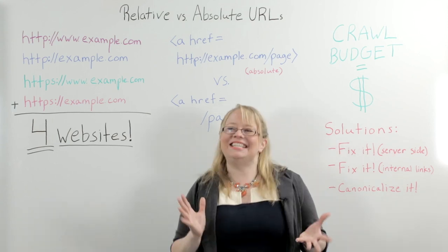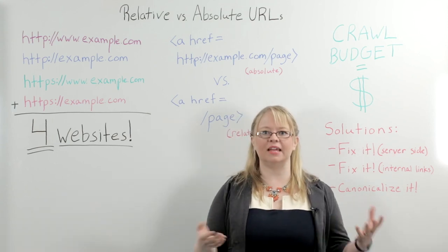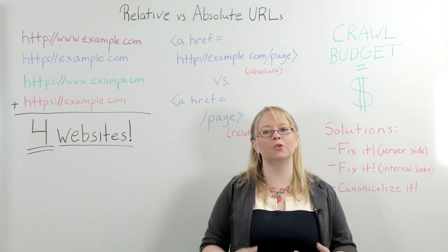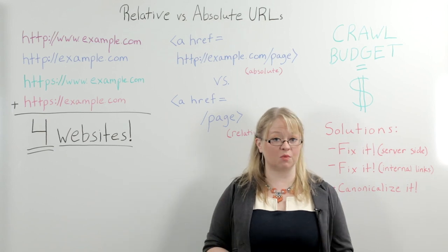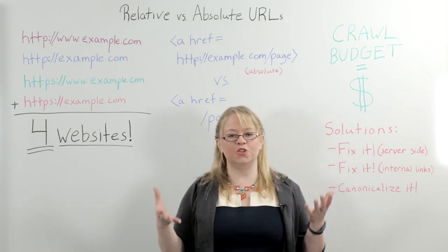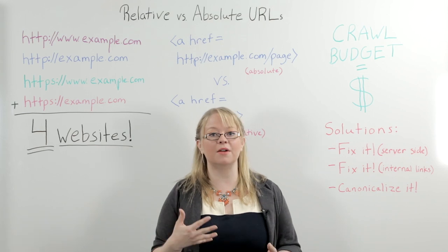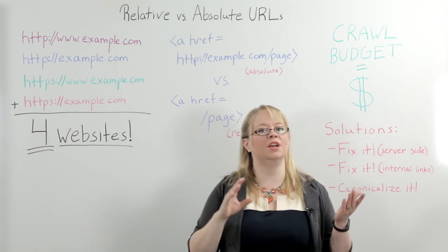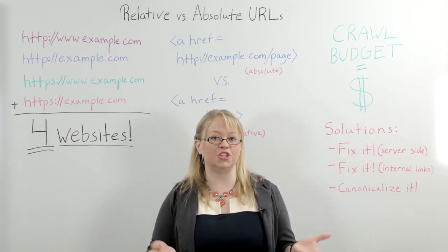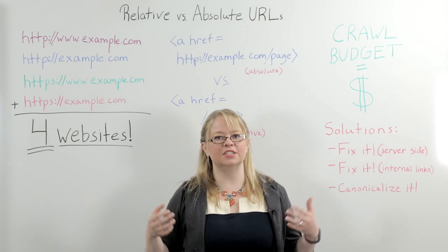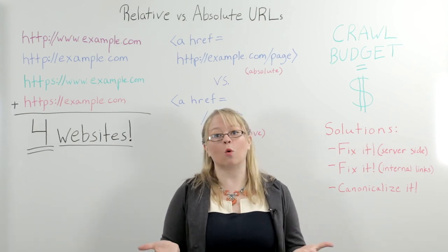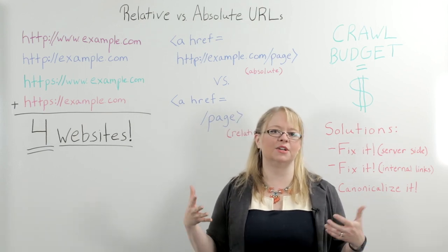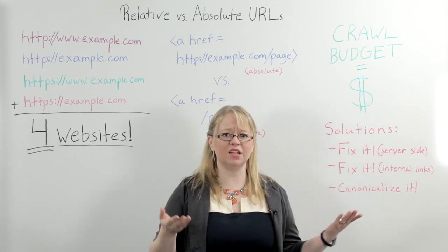It's not always a huge issue, and Google has gotten pretty good at figuring out what the real version of your website is. But you do want to think about internal linking. If you have four different versions of any URL that anybody could copy and paste when they want to link to you, you're diluting your internal links by four — which is not great. You would basically have to build four times as many links in order to get the same authority.